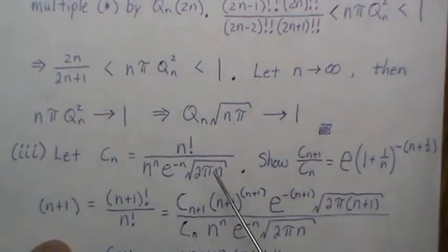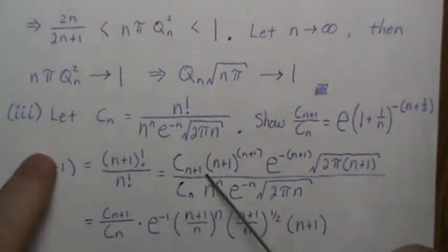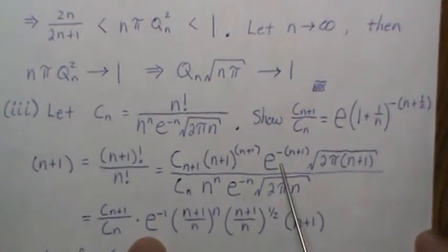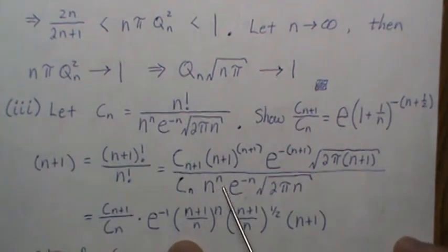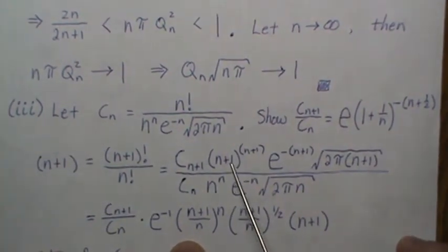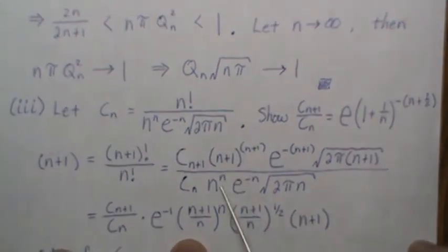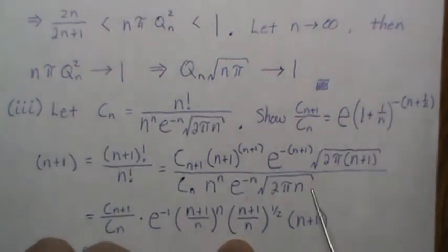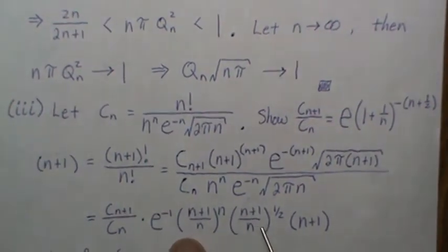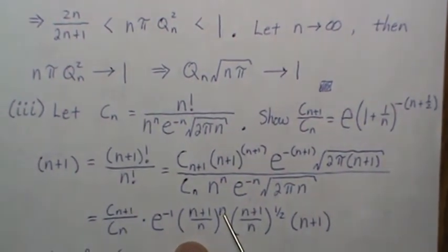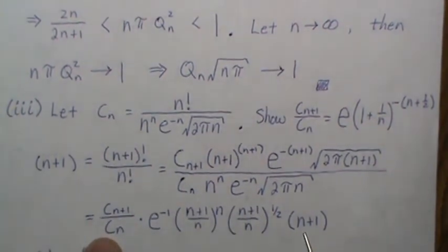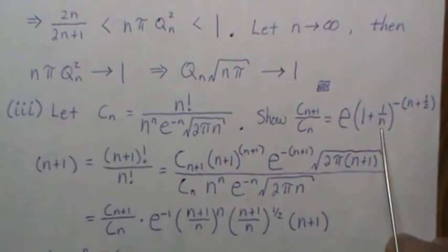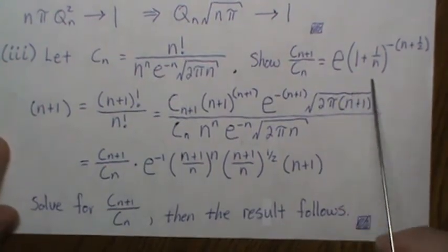Separating out the ratio c_{n+1} over c_n: the e terms mostly cancel leaving e to the minus 1; the n over n+1 terms combine; taking one n+1 factor over gives a clean expression. The square root of 2 pi cancels and we're left with n+1 over n to the one half, which combines with the other power to give n+1 over n raised to the n plus one half. Dividing both sides by n+1 and rearranging gives us that c_{n+1} over c_n equals e times n over n+1 raised to n plus one half.